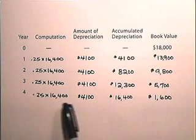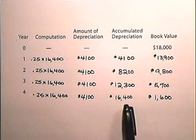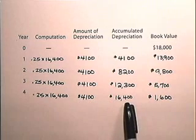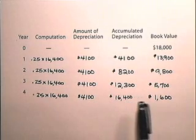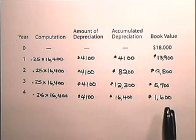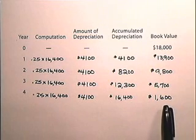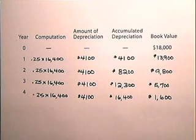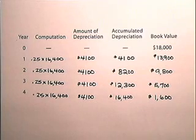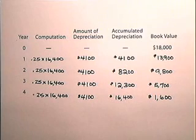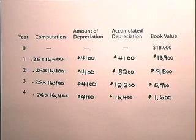For the fourth year, the amount of depreciation is the same. You'll see the accumulated depreciation is $16,400, and the book value is $1,600, which is the salvage value of the item. Remember, when doing a depreciation schedule, the book value of an asset at the end of each year is always the original cost minus the accumulated depreciation.